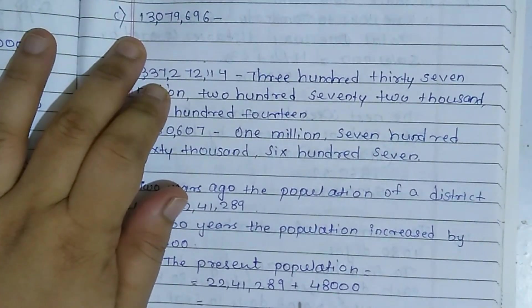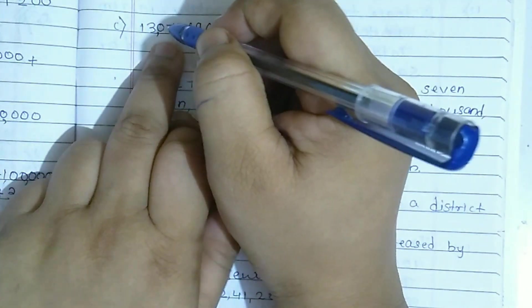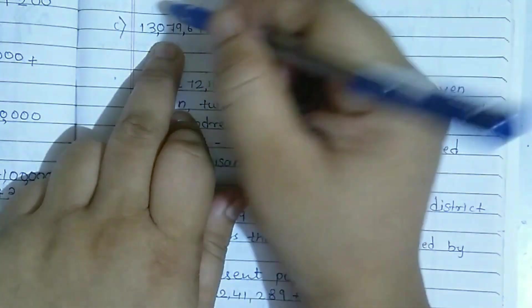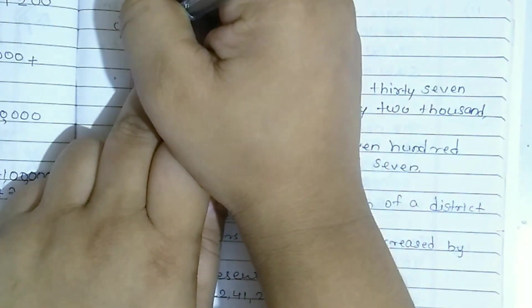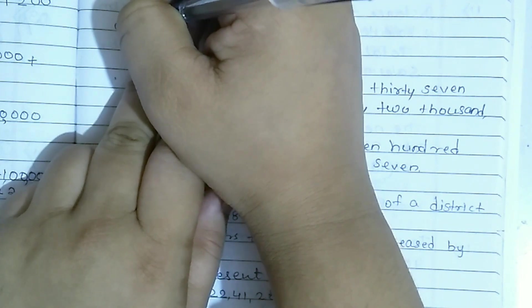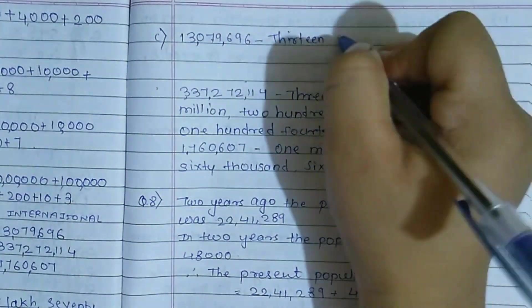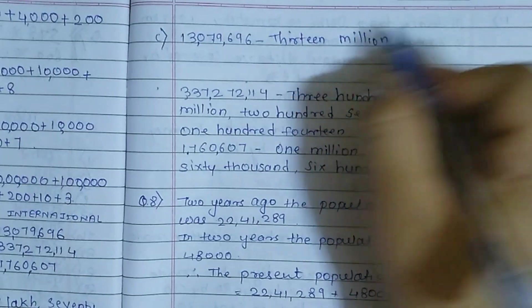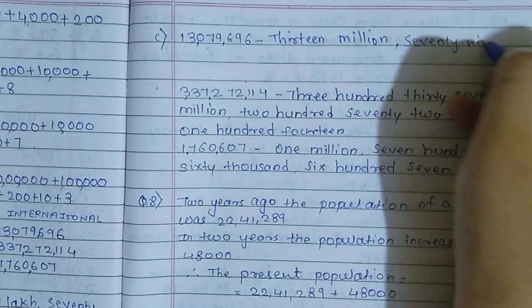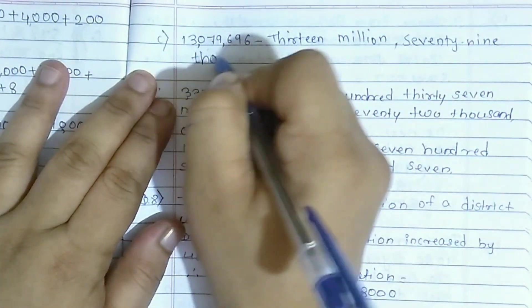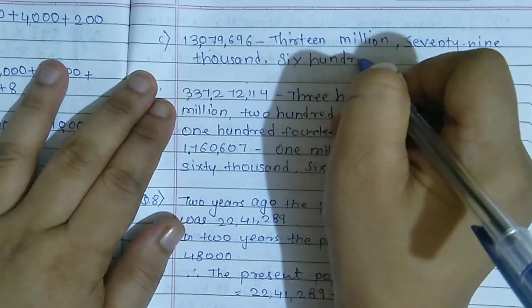Next, part C is international number system. Same, write in words. See, ones, tens, hundreds, thousands, ten thousands. Indian and international number systems are the same up to here. Then in international system comes hundred thousand. Just as lakh came there. So this becomes hundred thousand. Then comes million, ten million. So this becomes 13 million. So write: thirteen million. Then what will come? 79 thousand, seventy-nine thousand. After that, six hundred ninety-six. Did you understand this?